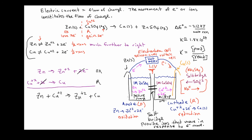For now, all I wanted to do was set up the system. We've achieved a setup that generates a current of electricity via an oxidation-reduction reaction — a flow of electricity that can be used to run a cell phone, laptop computer, and so on. In the next video, I'll describe how we actually calculate the 1.1 volt value and where it comes from. Thank you.